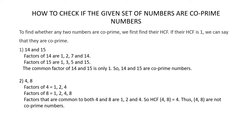Consider the numbers 14 and 15. The factors of 14 are 1, 2, 7, and 14. Factors of 15 are 1, 3, 5, and 15. The common factor of 14 and 15 is only 1. So 14 and 15 are co-prime numbers.